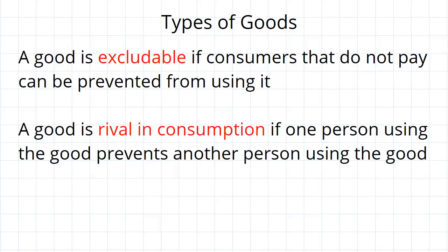To see what the four different types of goods are, we first need to look at a couple of concepts. The first is one we saw in the last topic — this is the idea of excludability. A good is excludable if consumers can be prevented from using it if they don't pay for it. We looked at common resources in the last topic and said that it is difficult to exclude people from using them. A good is rival in consumption if one person using the good prevents another person from using the good — this is a bit of a new concept.